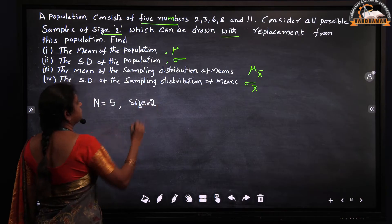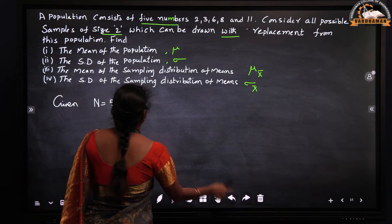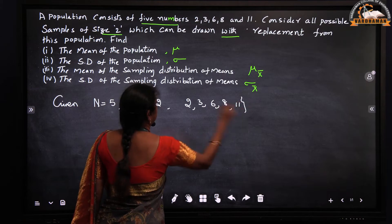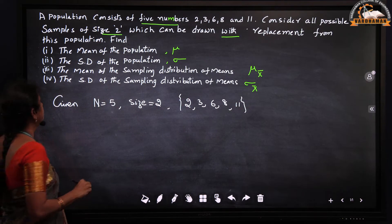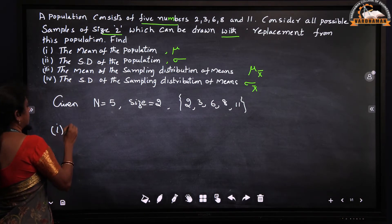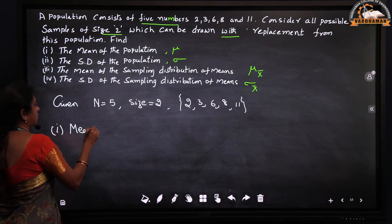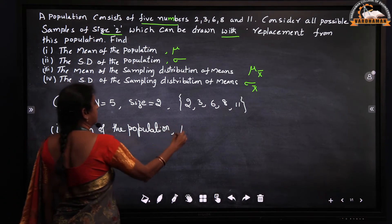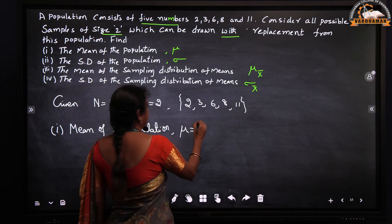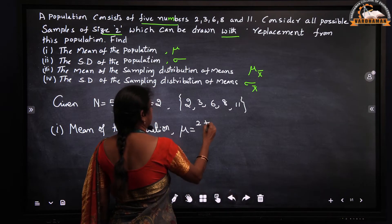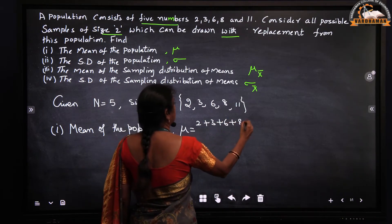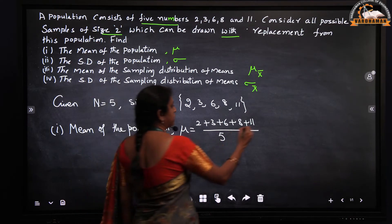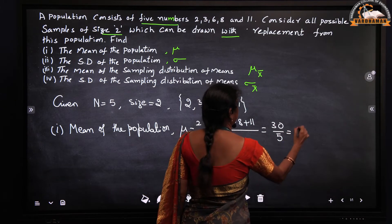The numbers given are 2, 3, 6, 8, and 11. First we will find the mean of the population. Mu is equal to (2 + 3 + 6 + 8 + 11) divided by n, where n equals 5. So 30 divided by 5 equals 6. The mean of the population is 6.